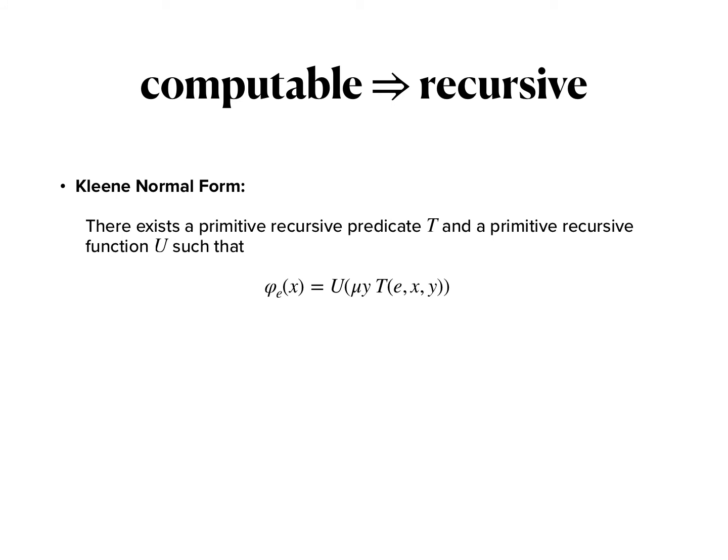Finally, you can also show that every partial computable function is partial recursive. This can be done through proving what is called the Kleene normal form, which says that there exists a primitive recursive predicate T and a primitive recursive function U such that the e-th Turing computable function φ_e applied to x is obtained by applying the μ-operator to T and then applying U to the result of that function.